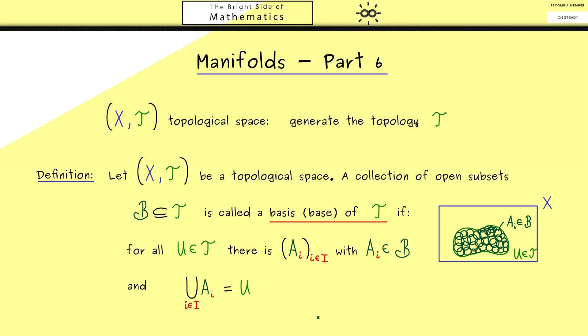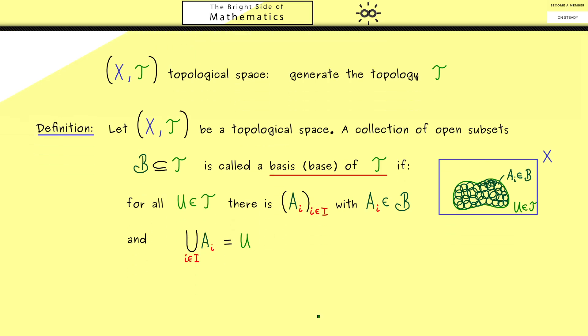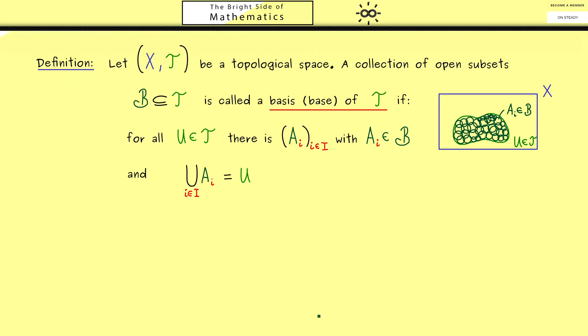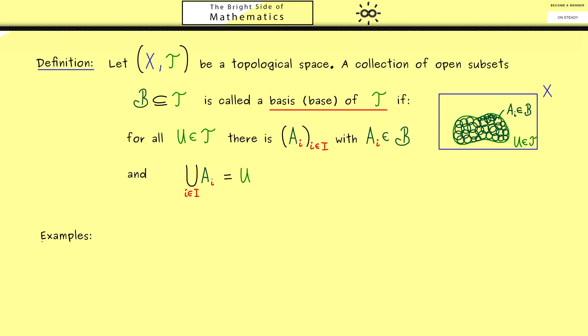Then I would say when we look at examples, you see that this is not a complicated notion at all. And as always, we should start with simple examples. Now the simplest one you might already spot in the definition, in the case where it is possible to choose just one A_i here.